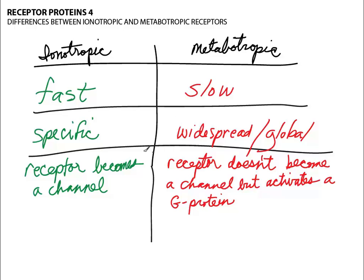Finally, another difference is whether or not the receptor becomes a channel, as it does with ionotropic receptors, or doesn't become a channel, as with metabotropic receptors — where a G-protein has to be activated, and then as a consequence, either directly or indirectly, ion channels will either open or close. In the end, the effect is still relatively similar: there will be a change in the flow of ions, which will lead to a change in membrane potentials. In our next video, we will examine in more detail the effects of ion movements on the membrane potentials.